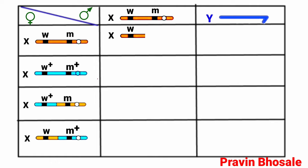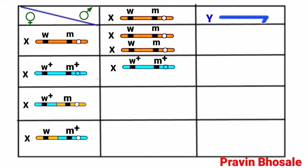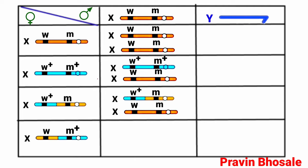When the X chromosome with w and m combines with the X chromosome with w and m, the female will have white color eye and miniature wing. When the X chromosome with w plus and m plus combines with X chromosome with small w and small m, the female will have red color eye and normal size wing. When the X chromosome with w and m plus combines with X chromosome with small w and small m, the female will have white color eye and normal size wing.